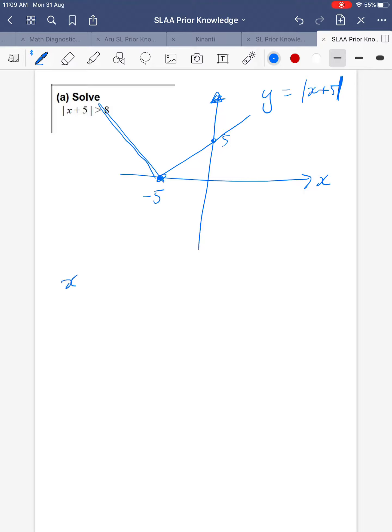Okay, then if we want the x plus 5 absolute value to be greater than 8, we draw on y equals 8 here. And the actual solutions we want are here onwards and here downs.